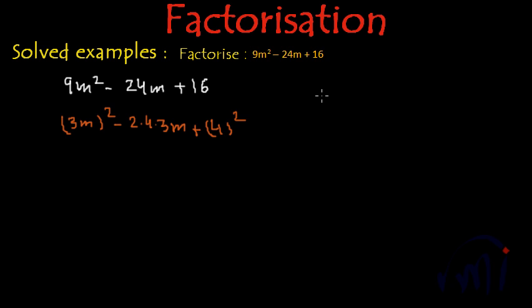So this is actually in the form of a square minus 2ab plus b square, which is nothing but a minus b whole square. If I assume 3m is equal to a and 4 as b,